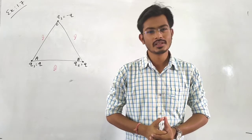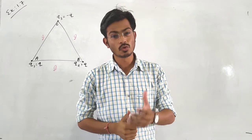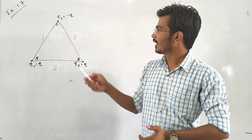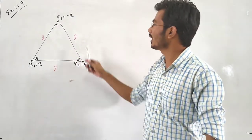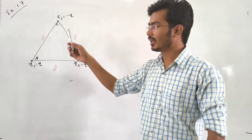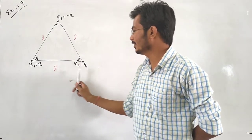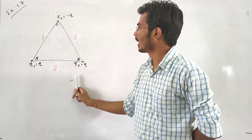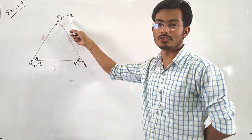In this example, we have to find out the force on each charge. As shown in the figure, charges q1, q2, and q3 are placed at the vertices. Q1 and q2 are the positive charges, and q3 is the negative charge.